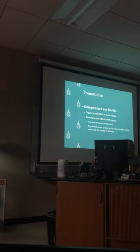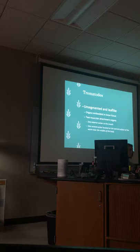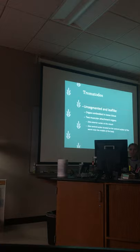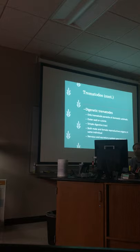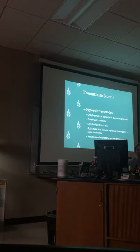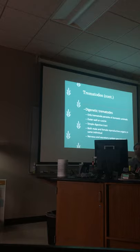Trematodes: these are unsegmented and leaf-like. They have one anterior sucker at their mouth end, and then they have a ventral sucker located on the ventral surface of the worm near the middle of the body. These are the ones that look kind of fluke-like — they're really flat and skinny. The trematodes do have both male and female reproductive organs in the same individual — underline that statement.